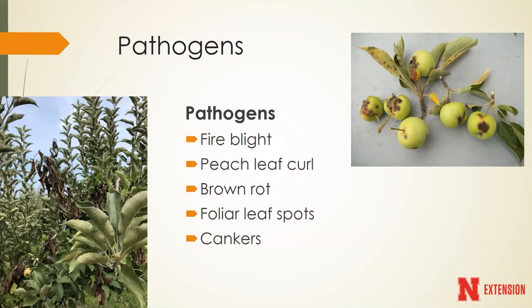A lot of our foliar leaf spots are also well controlled during the dormant season - though some may disagree. A lot of foliar leaf spots overwinter on the leaf tissue, on the leaves that have fallen on the ground. If we are able to manage that fallen foliage, that can reduce the inoculum for a lot of our foliar leaf spots.